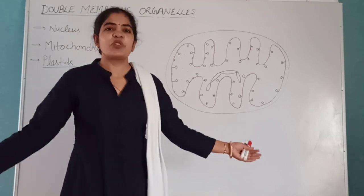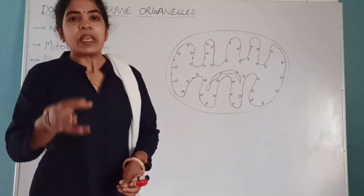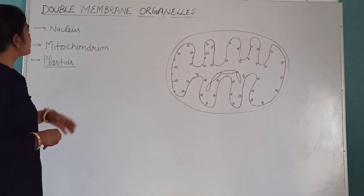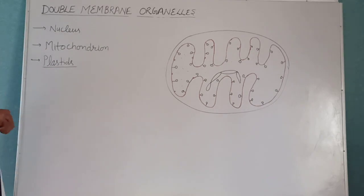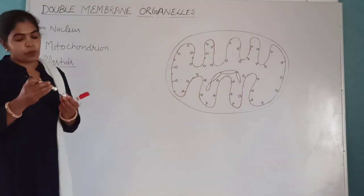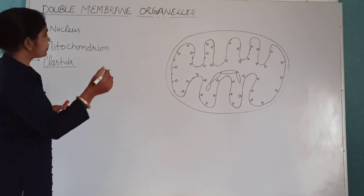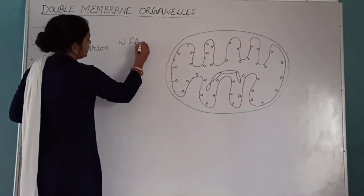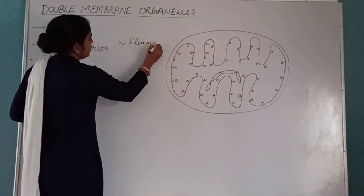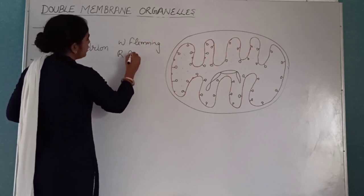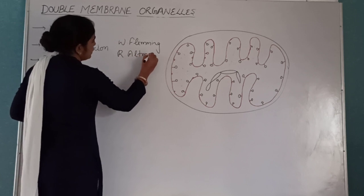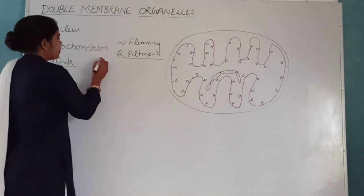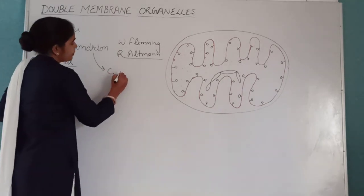Hello students, welcome back to our YouTube channel, Concepts in Science. The next double membrane organelle which we will discuss in this video is mitochondrion. The credit for the discovery of mitochondria was given to W. Fleming and R. Altman, but the term mitochondria was given by C. Benda.